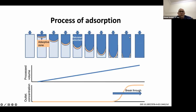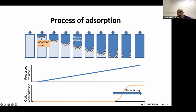Looking at the adsorption process in the graph: blood enters through the inlet and exits through the outlet, passing through the adsorptive zone. Over time, this zone begins to accumulate toxins and becomes saturated. After saturation, molecules continue to accumulate behind it until reaching the breakthrough point, at which time the blood is no longer being cleaned.